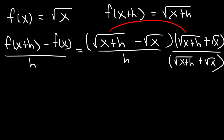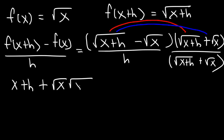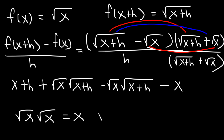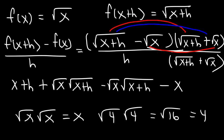Now let's FOIL. The square root of x plus h times the square root of x plus h — the square roots cancel, giving us x plus h. Then we have the square root of x plus h times the square root of x. Then negative square root of x times square root of x plus h. And then negative square root of x times positive square root of x is just negative x, because multiplying the square root of x by itself gives x — the two square roots cancel leaving the value inside.